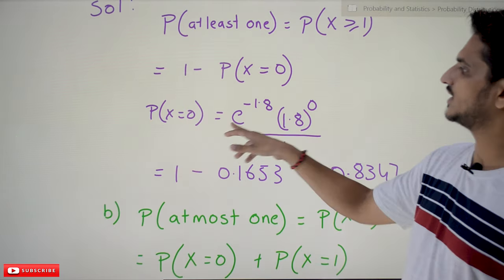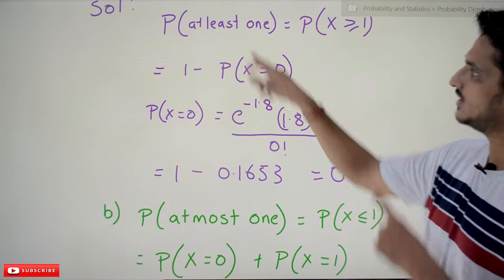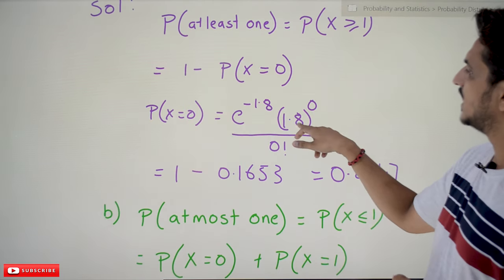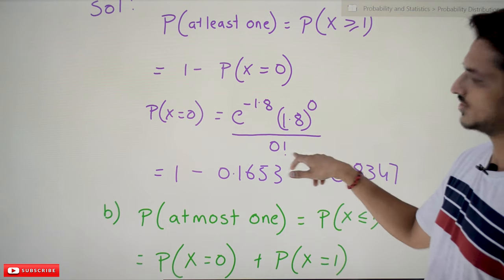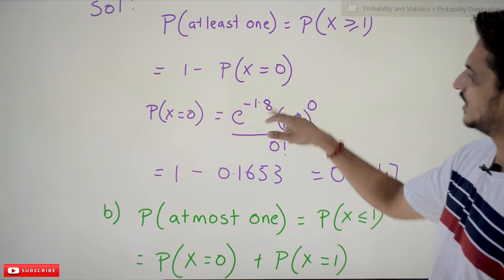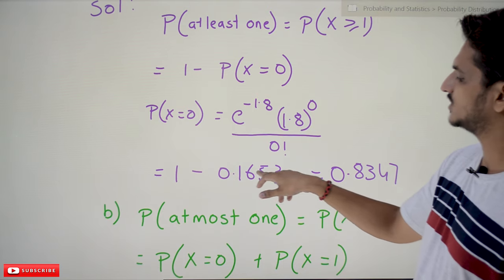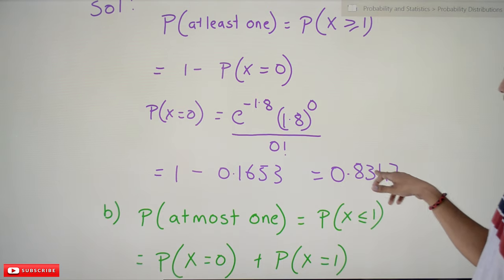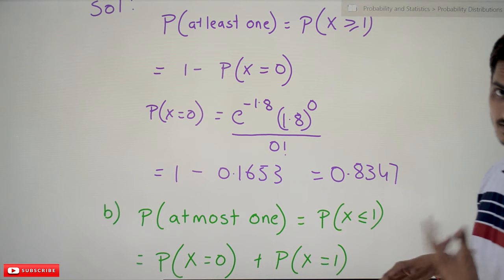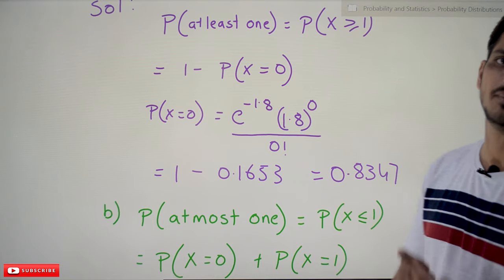So this can be written as probability of x equals 0 is e power minus lambda. Lambda value is already given as 1.8. Lambda power x is 0 by 0 factorial. If you substitute, if you calculate the value, we got here is 0.1653. 1 minus 0.1653 is 0.8347. There is 83% chance at least one accident will happen.